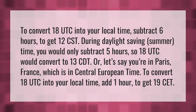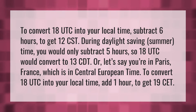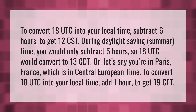To convert 18 UTC into your local time, subtract 6 hours to get 12 CST. During daylight saving summer time, you would only subtract 5 hours, so 18 UTC would convert to 13 CDT.